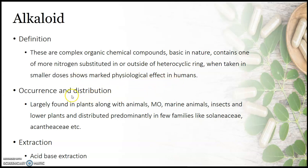Regarding their occurrence and distribution, alkaloids are largely distributed in plants, along with animals, microorganisms, marine animals, insects, and lower plants. They are distributed predominantly in a few families of plants, like Solanaceae and Acanthaceae. In plants, they are deposited from root to the fruit.